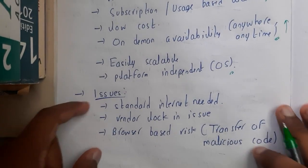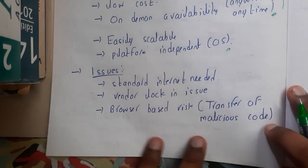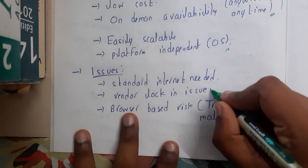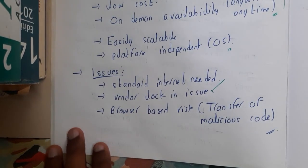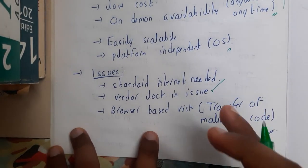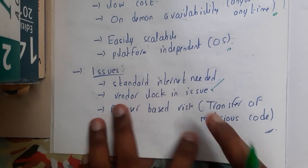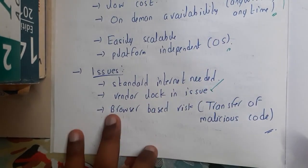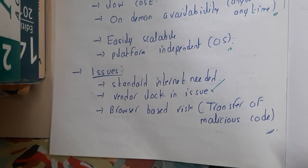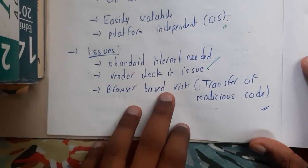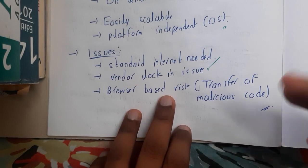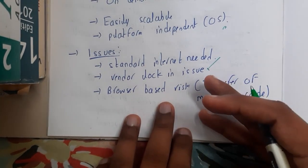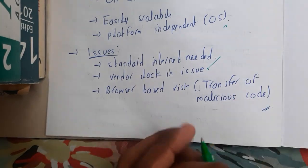Now let us go through some issues. For any cloud computing service, vendor lock-in is one of the most common issues — that is why vendor lock-in should not be there. Similarly, a standard internet connection is required to use the application. There are also browser-based risks, such as malicious code — if the application's browser has some issues, those could raise further problems.